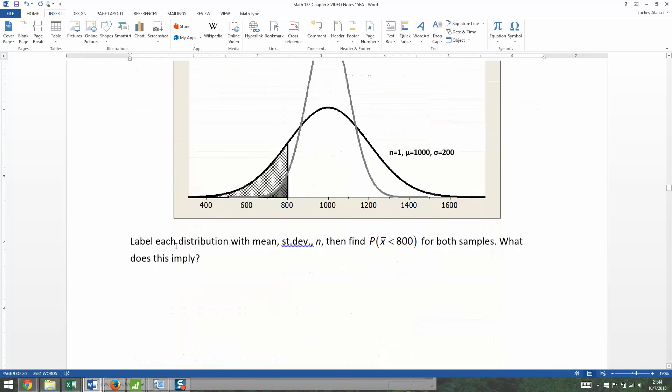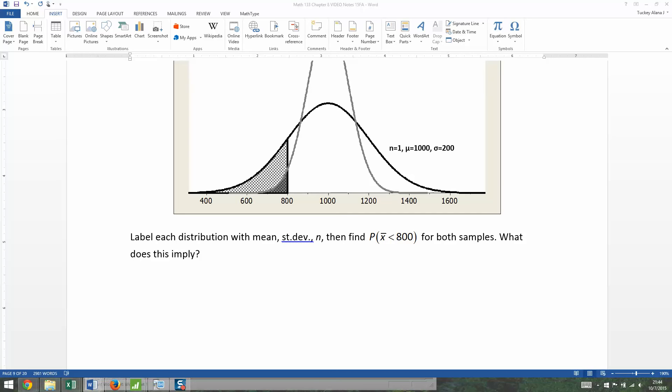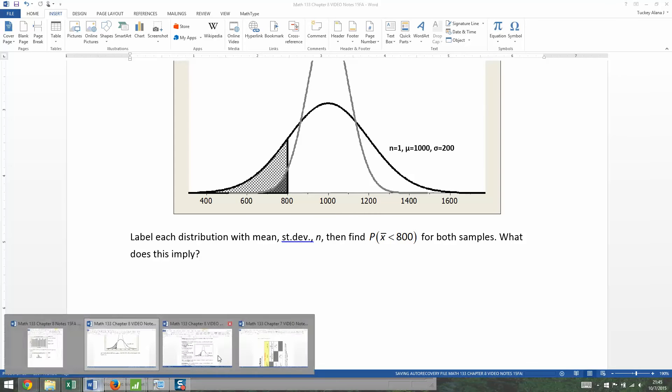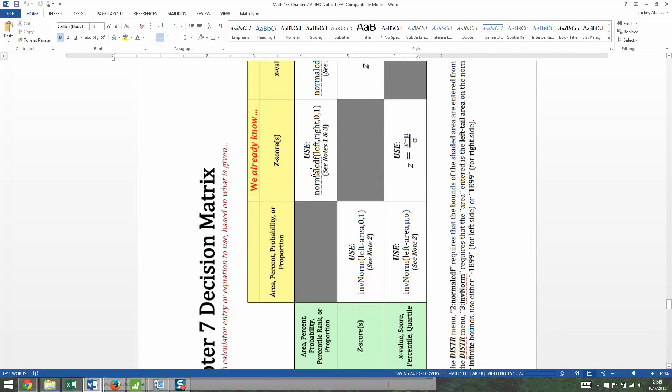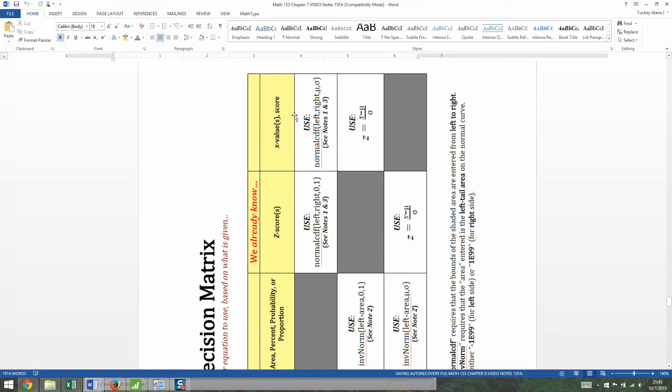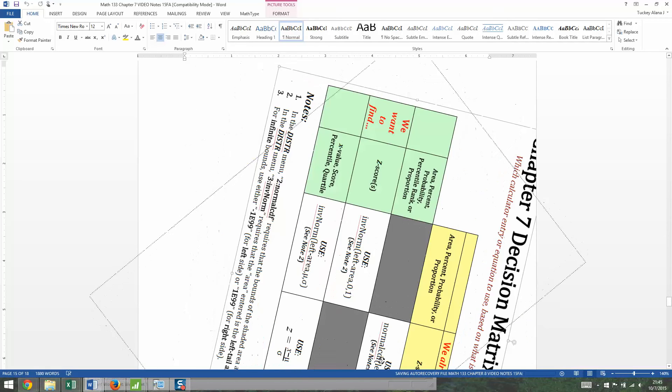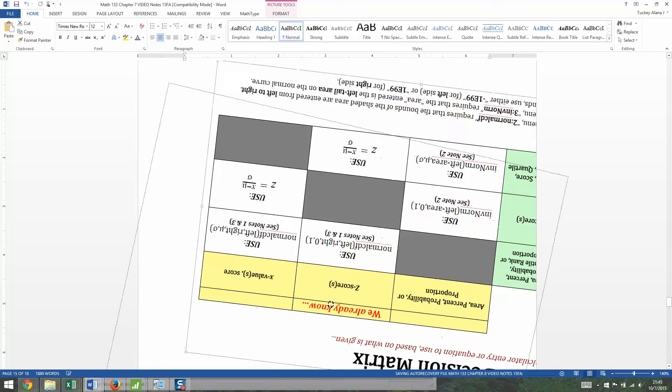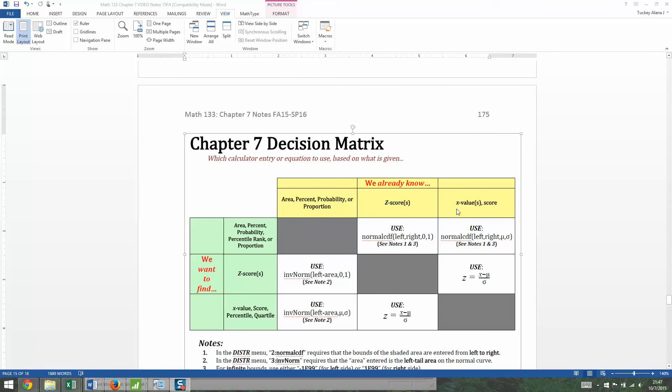So let's start this with n equals 1. When n equals 1, I want to find the probability that X is less than 800. This is a normal curve, so we're going to use the normal distribution, the normal CDF distribution, and we can get help from the decision matrix. We have an X value given to us, 800. And we're looking for the area under the curve, so we're going to be using normal CDF—left comma right comma mean comma standard deviation.